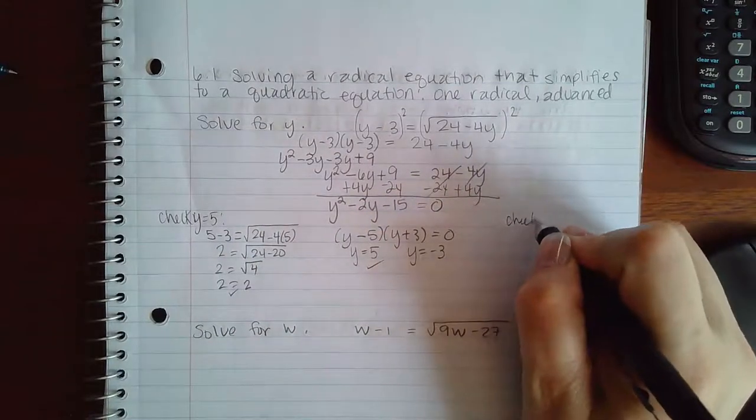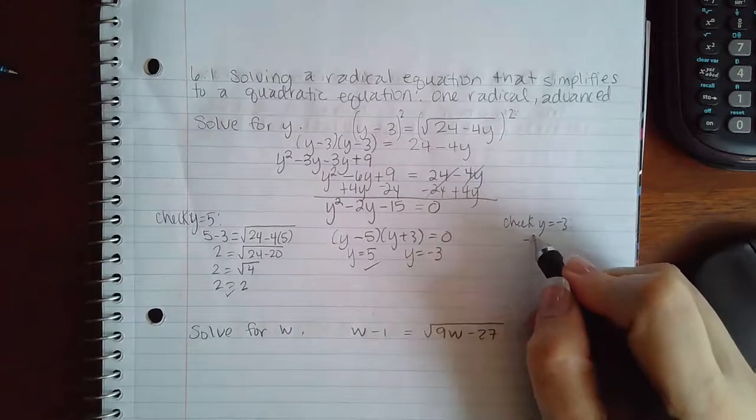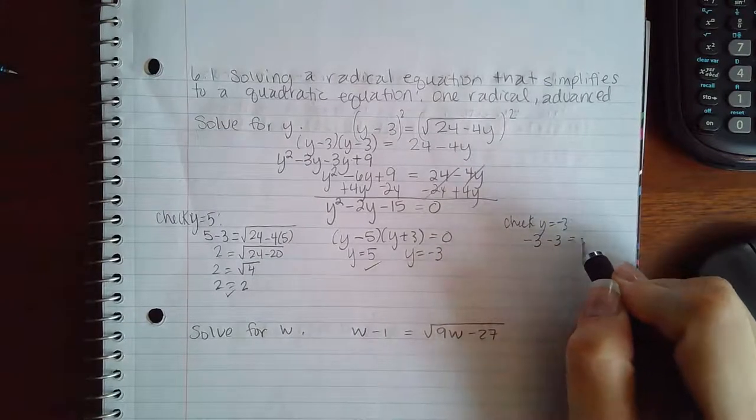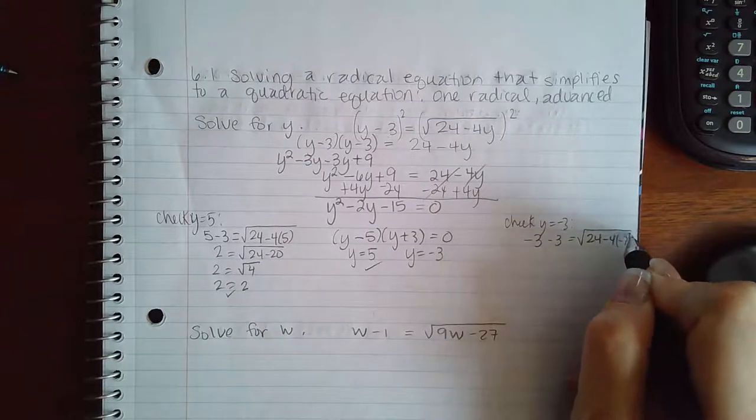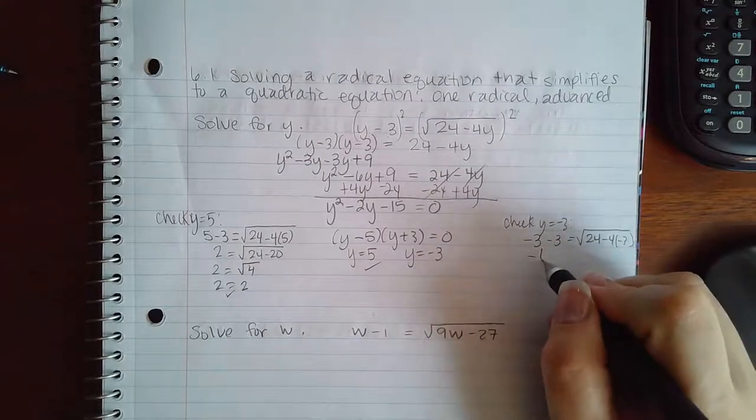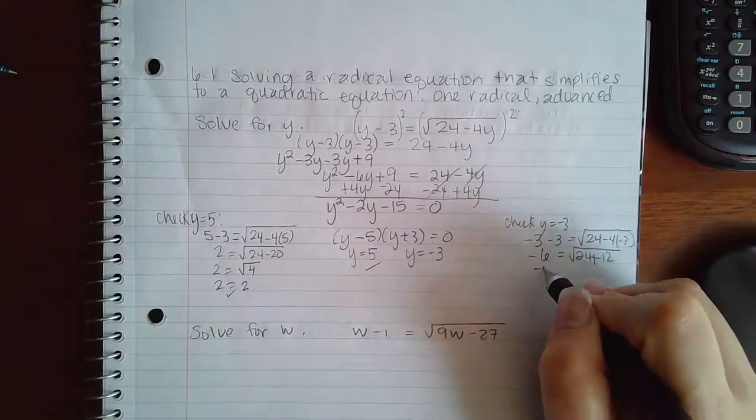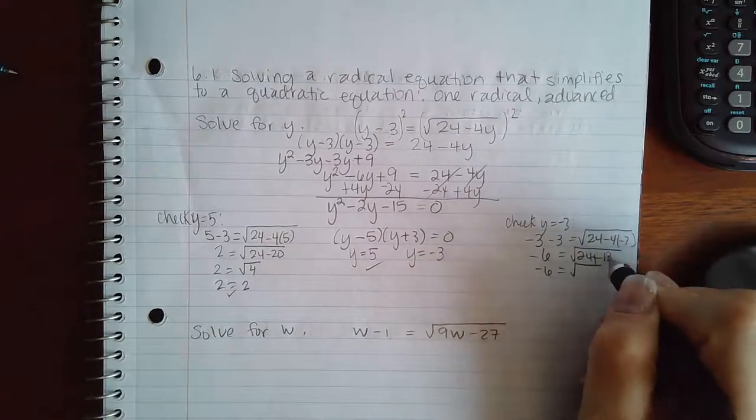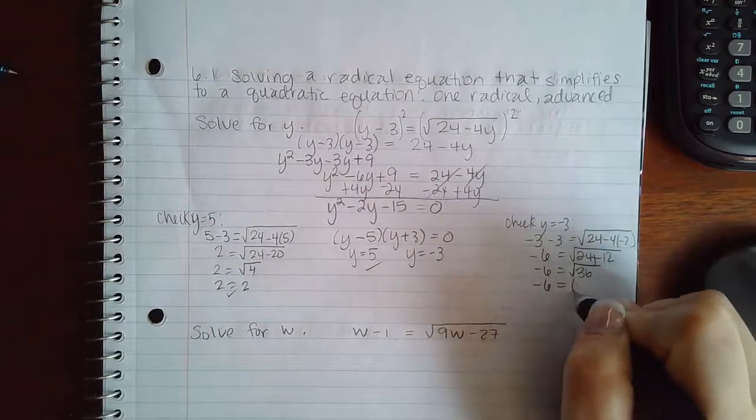Now let's check y equal to negative 3. So I get negative 3 minus 3 equals the square root of 24 minus 4 times negative 3. Here I get negative 6. Here I get 24 plus 12, I get 36. And the square root of 36 is 6.